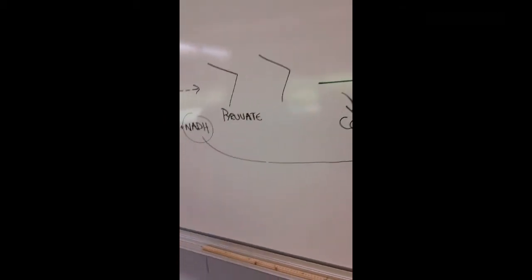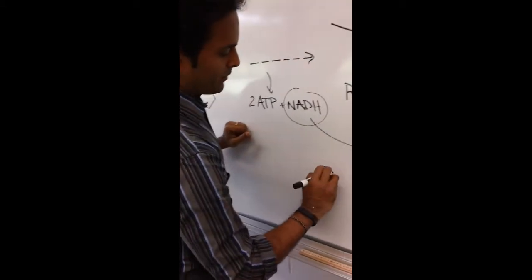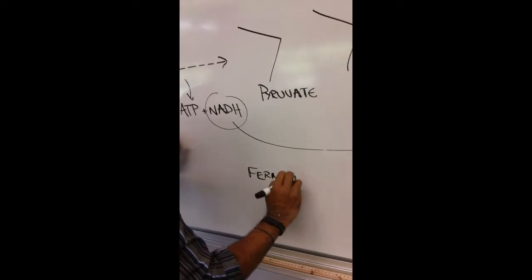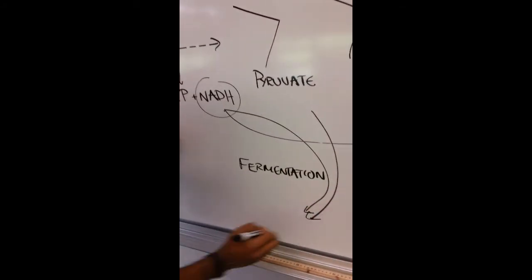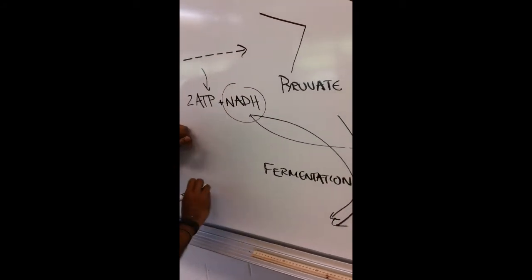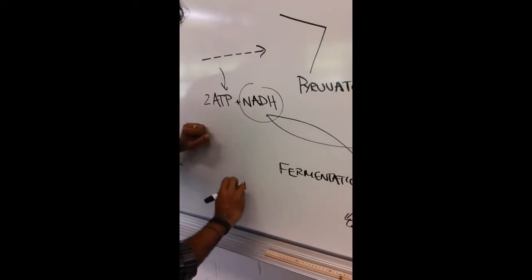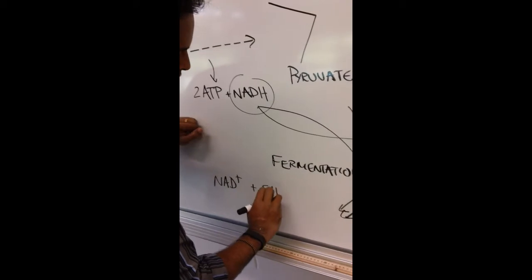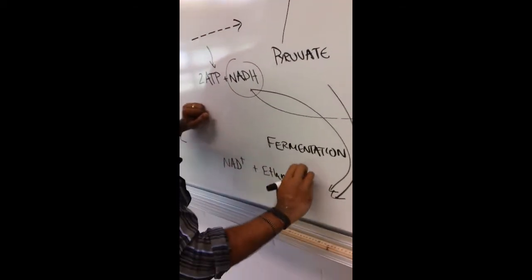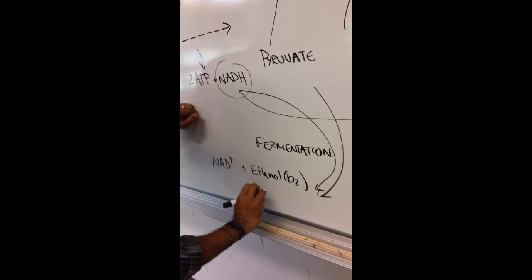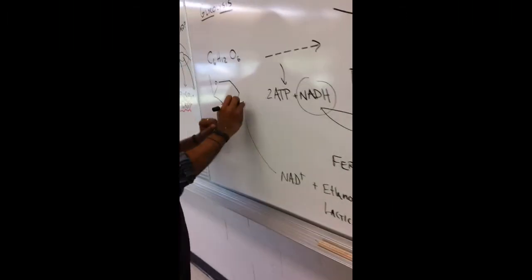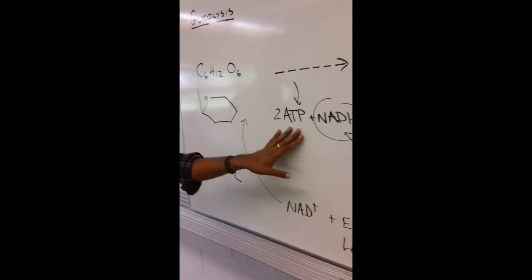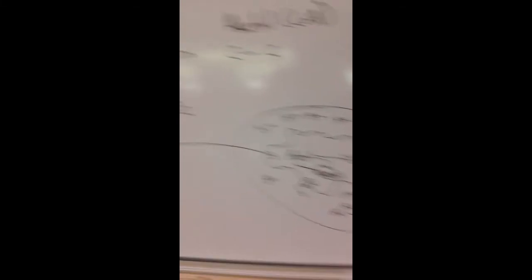And basically what happens in fermentation is you take pyruvate and you take NADH. You take the electrons out of NADH to make NAD+, and then you get either ethanol and CO2 or lactic acid. That NAD+ can then cycle back into glycolysis, and you can generate that 2 ATP. With the mitochondria, the release of energy is far more efficient because you're not wasting that NADH.